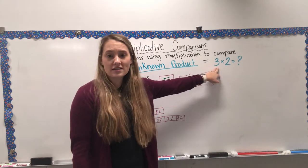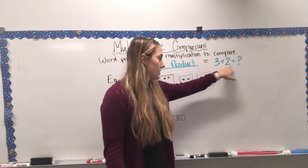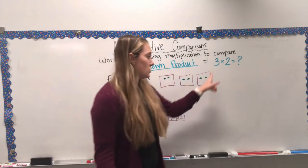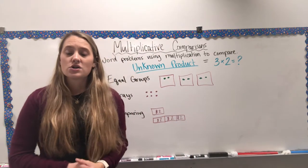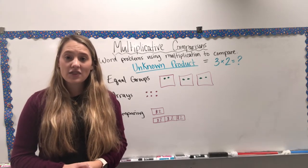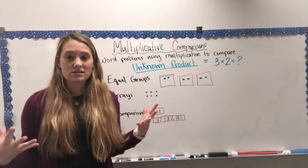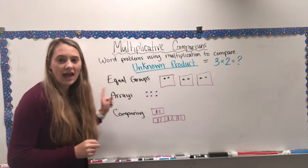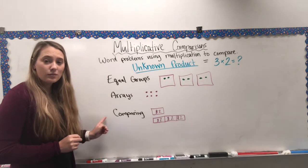An unknown product equation looks like a number times another number equals a question mark, because we're not sure what our product is. For example, three times two equals question mark — we don't know what it is. When we look at word problems today, we're going to find that unknown product. There are three ways we'll look at this: equal groups, arrays, and comparing.